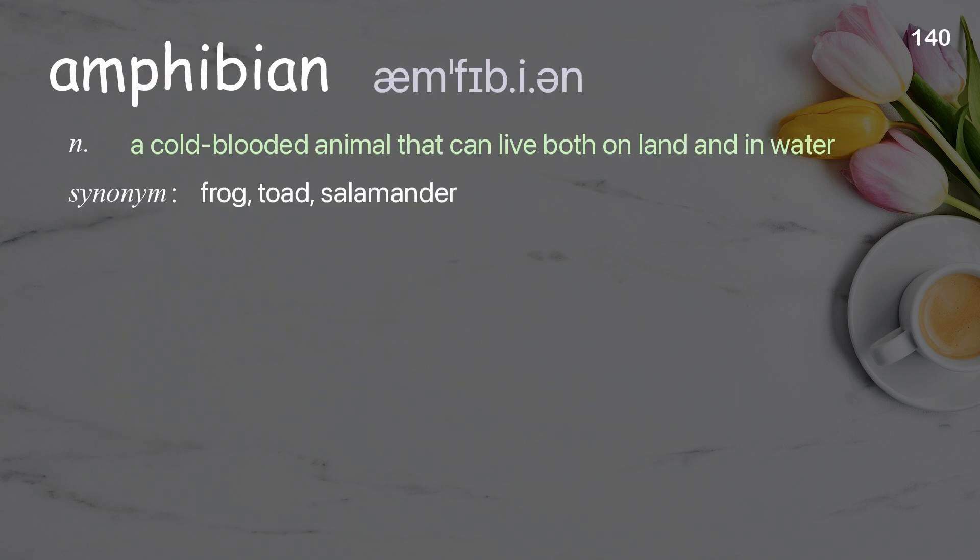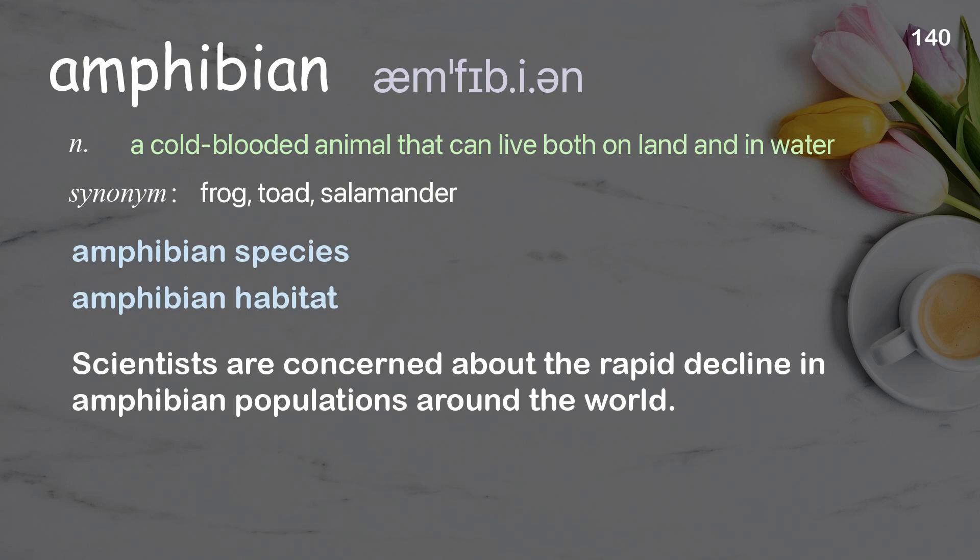Amphibian: a cold-blooded animal that can live both on land and in water. Examples: amphibian species, amphibian habitat. Scientists are concerned about the rapid decline in amphibian populations around the world.